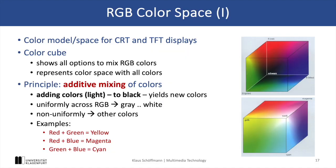RGB uses an additive color model, like also used in display technology. Each pixel is represented by three LEDs that emit light for red, green, and blue, and by this combination we can create all colors. So when we use red and green at the same time with maximum intensity, this results in yellow, and if we use red and blue with the same intensity, this results in magenta. If all three color channels are used with maximum intensity, this ends up as white.